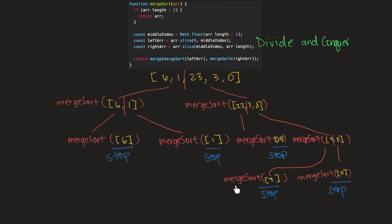These calls to merge sort are the same as those previous calls, but we still haven't called merge. What merge is going to do is take two already sorted arrays and merge them together into one single sorted array. That merge call is going to combine those results into one sorted array.